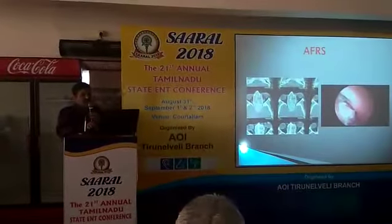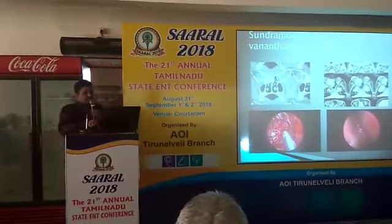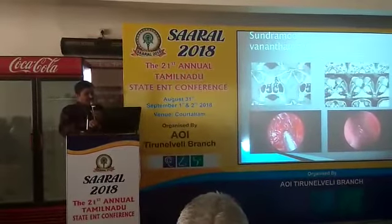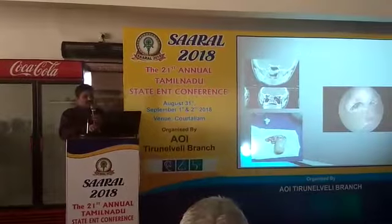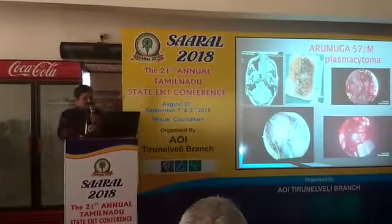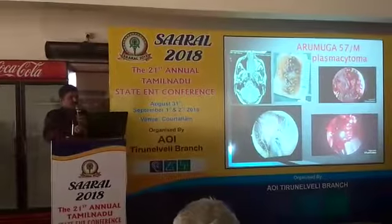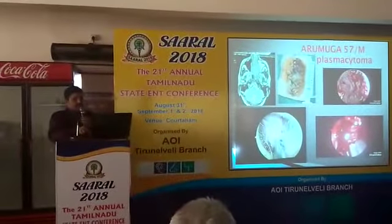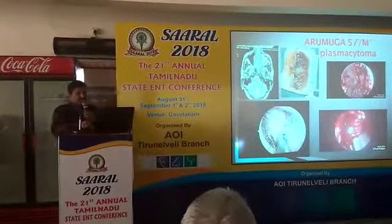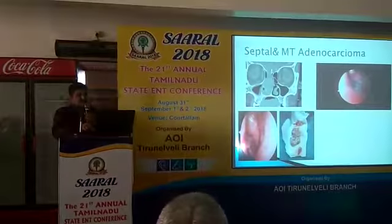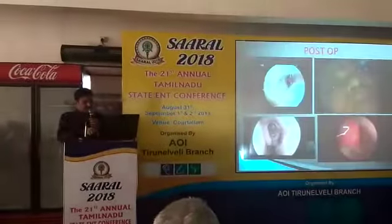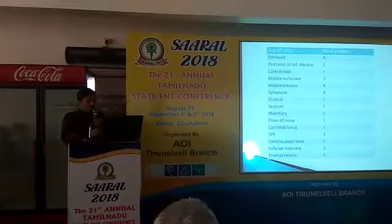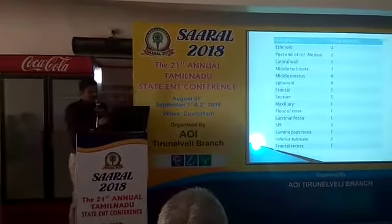Fibrous dysplasia is present as a posterior ethmoid cell. This other case is in the infra-orbital chest area. This case presented with a sinonasal mass but post-operatively came as JNA. This is also JNA. This case presents a polyp mass in the left nasal cavity with attachment in the posterior ethmoid. This case is adenocarcinoma attached with the septum.